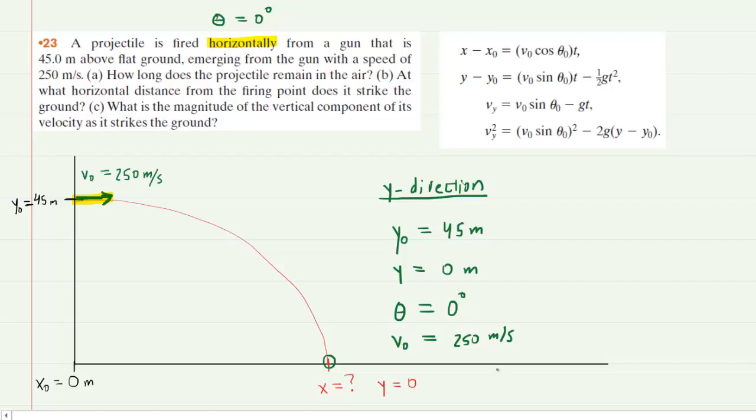In the y direction, the projectile is under the influence of gravity. So the magnitude of the acceleration would be the value of g, 9.8 meters per second squared. And we're looking for time.